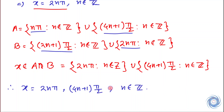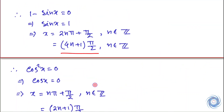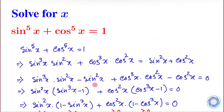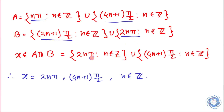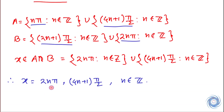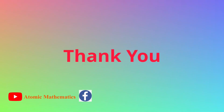So this is the solution. We are supposed to solve this equation for x, and the answer is x = nπ and x = (4n+1)π/2, where n belongs to ℤ. Thank you.